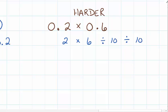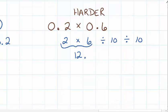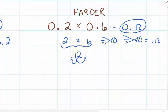2 times 6 gives us 12. Then we move the decimal one place value and then a second place value because we're dividing by 10 twice. We end up with the answer 0.12 as our final answer.